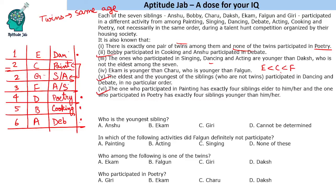Now let us answer the questions. The youngest sibling is Akam. Fagun definitely did not participate in painting, since painting belongs to one of the twins at positions four or five; Fagun would be doing acting or singing. Among the options, Giri is one of the twins — the twins being Charu and Giri. Finally, Daksh participated in poetry. That is the complete solution to the set.